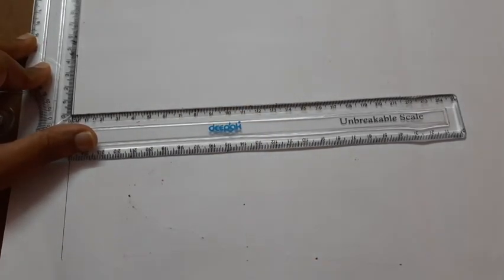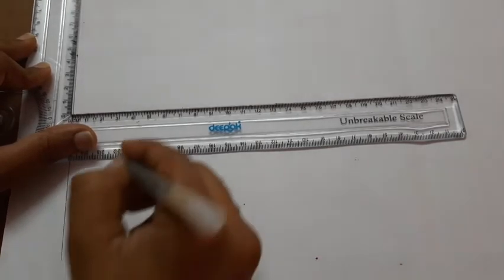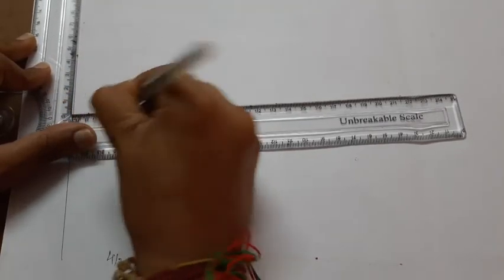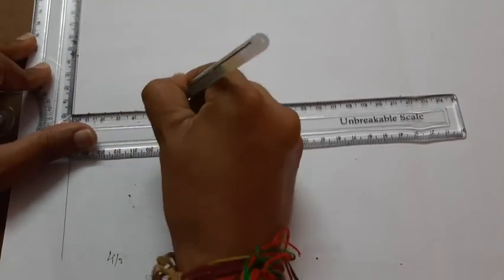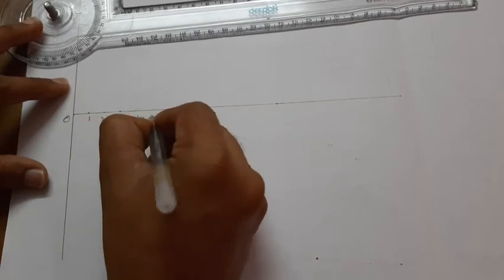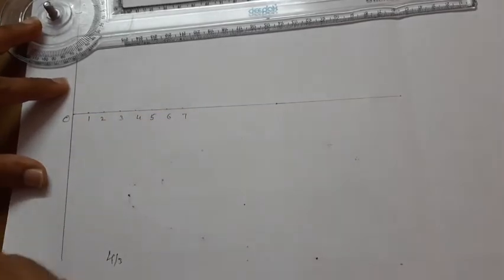Eccentricity is 4 by 3. 3 plus 4 is 7 parts. 7 parts is 10, 20, 30, 40, 50, 60. So 1, 2, 3, 4, 5, 6, 7.